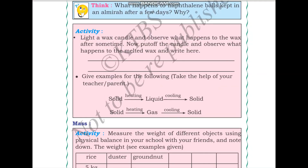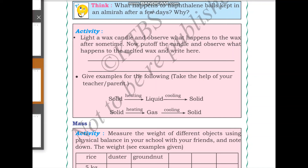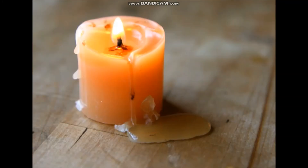For the next activity, light a wax candle and observe what happens to the wax after some time. Then put off the candle and observe what happens to the melted wax. Like we saw in the picture, when the candle is on, the wax is going to melt. If you put it off, you can observe that the melted wax becomes solid again.